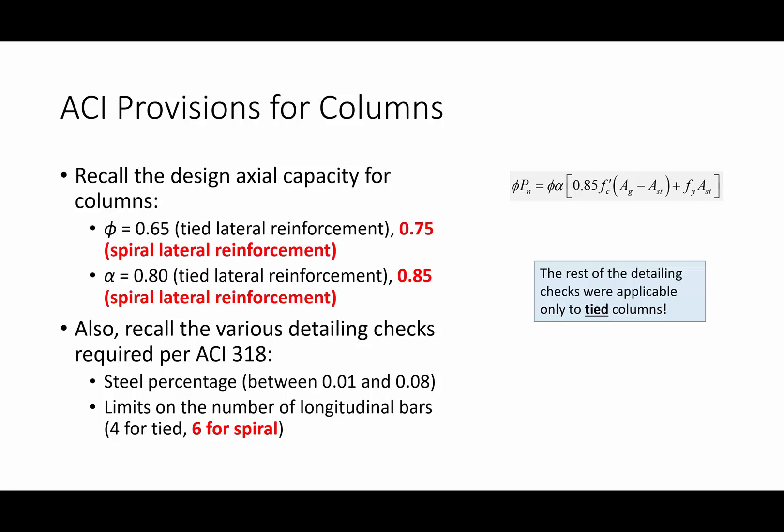One of the things you'll notice is that the phi values and alpha values are higher for spirally reinforced columns — you're allowed to use more of that capacity. I also want to remind everybody of the detailing checks for columns. We need to keep our steel percentage between 0.01 and 0.08. We also have limits on longitudinal bars: four for tied columns and six for spirally reinforced columns. For spirally reinforced columns, it's really just those two checks plus one more related to spiral reinforcement.